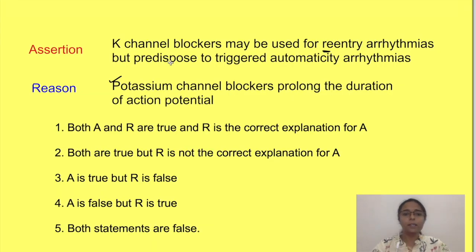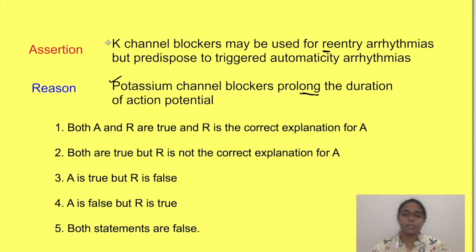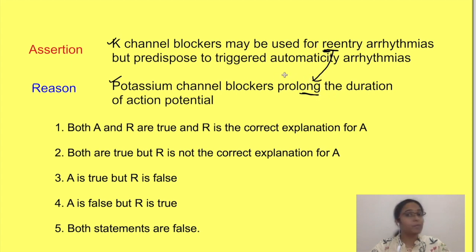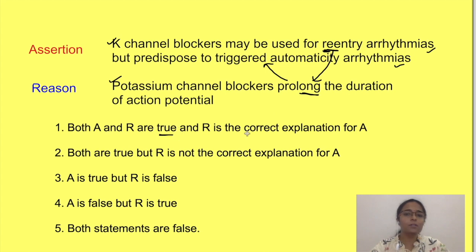Now back to our original question. The reason statement is correct — potassium channel blockers do prolong the duration of action potential by delaying repolarization. The assertion statement is also correct — in re-entry tachyarrhythmias we want to prolong action potential duration so cells are refractory for longer. However, prolonged action potential may also lead to early after-depolarization. Thus these drugs, though useful for one type of arrhythmia, predispose to another type. Both statements are true and the reason is the correct explanation for the assertion — the first option is the correct answer.